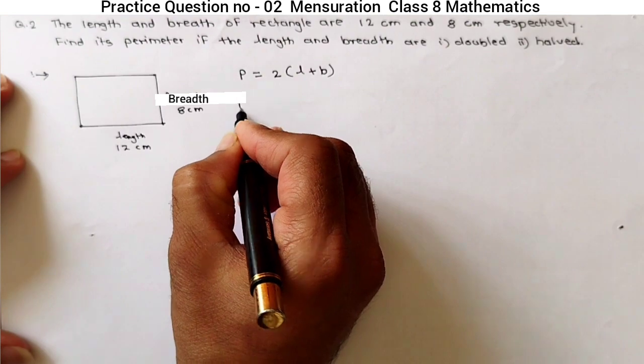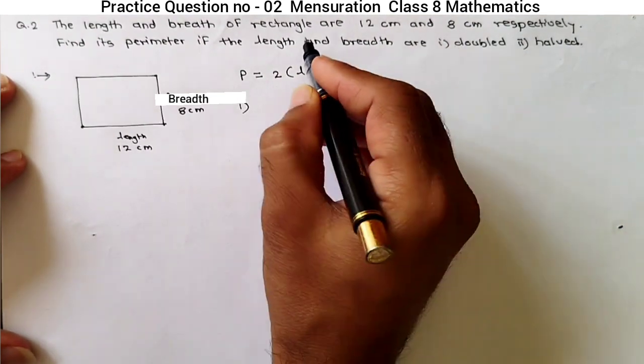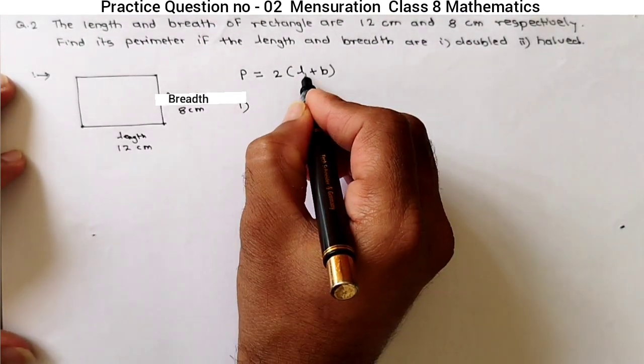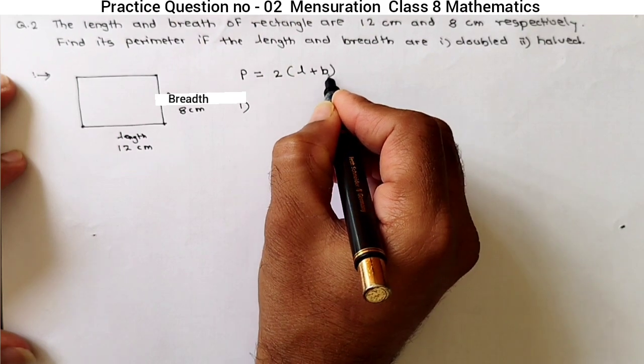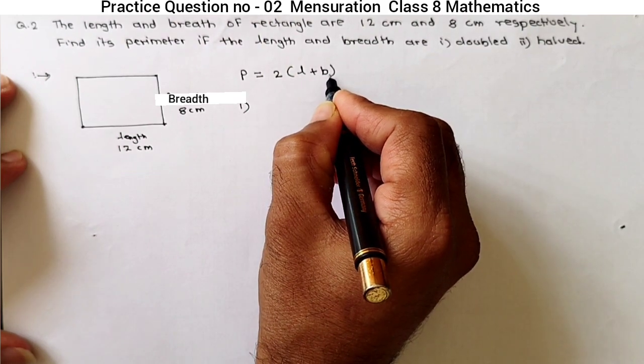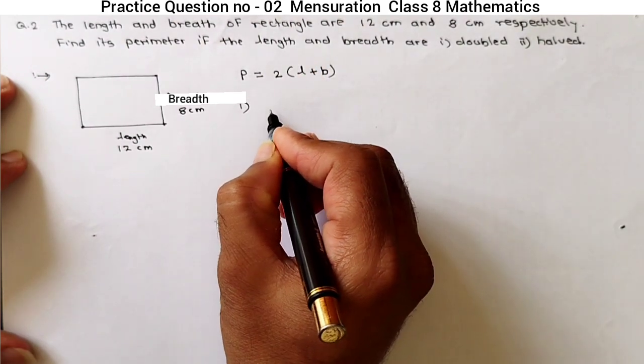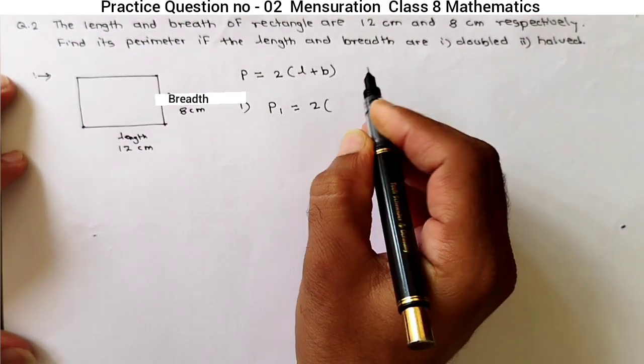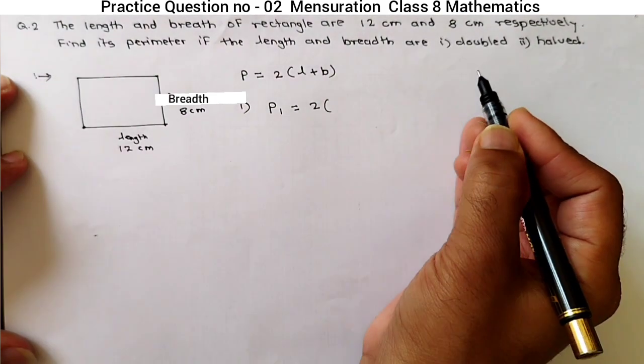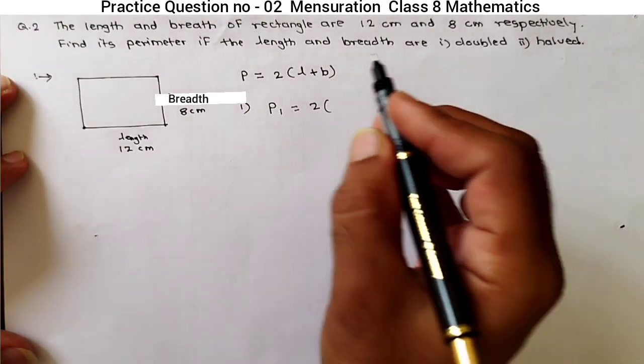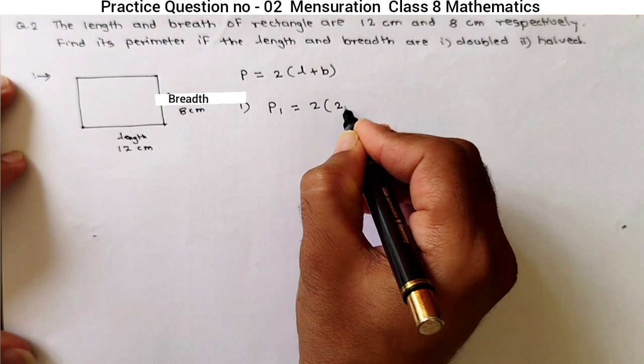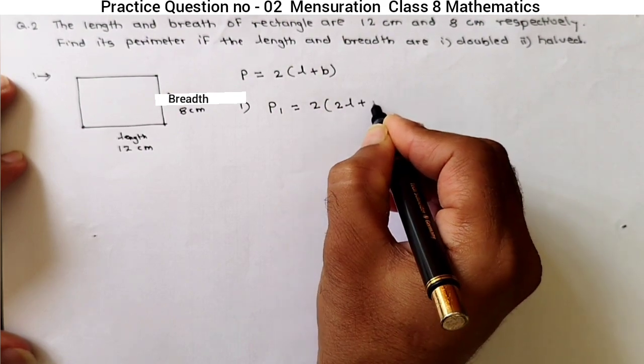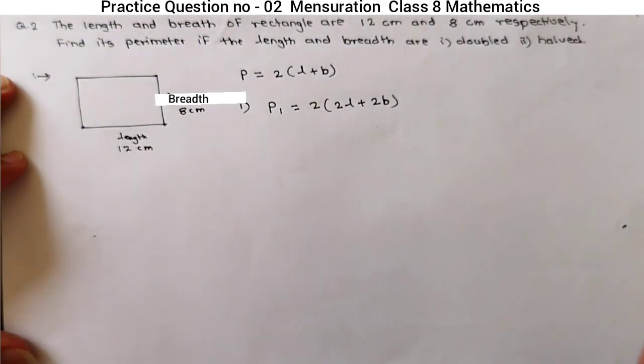Now, in first case, when length and breadth are double, means L will become 2L and B will become 2B. So, in first case, P1 is equal to 2 into bracket, L will become 2L because it is double, so 2L plus 2B.